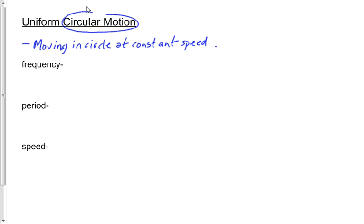So, how often something happens — that's a qualitative definition, and that's good. A quantitative definition would be: the number of cycles — or in this case, the number of revolutions, number of rotations — per second.